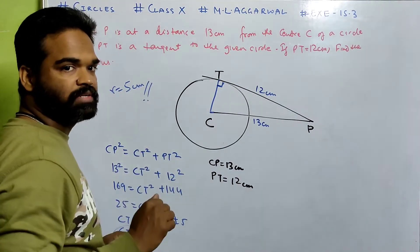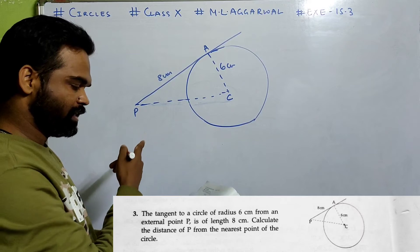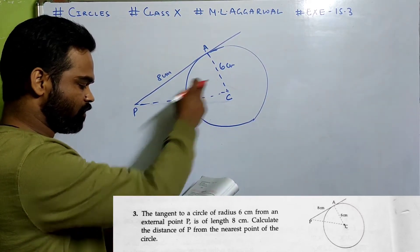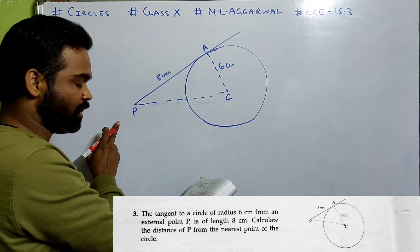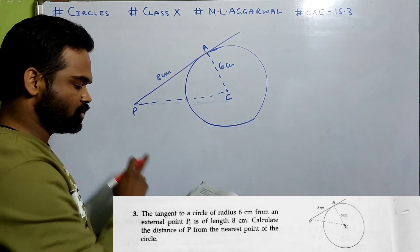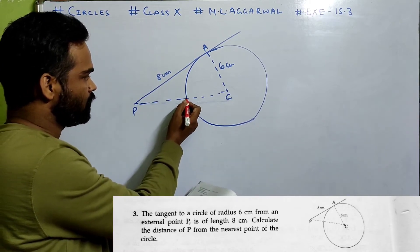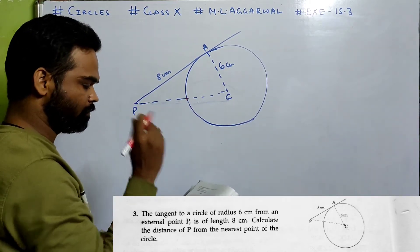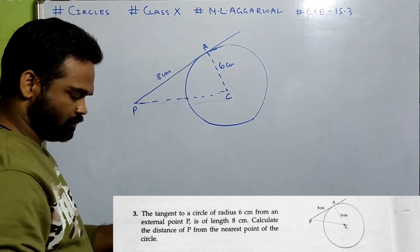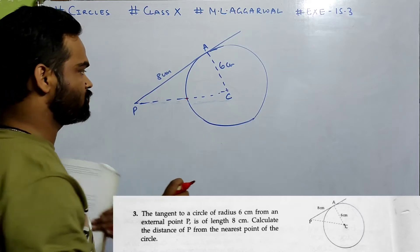Now let us look at number 3. The tangent to a circle of radius 6 cm from an external point P is of length 8 cm. Calculate the distance of P from the nearest point of the circle — not from the center, but from the nearest point on the circle's circumference.